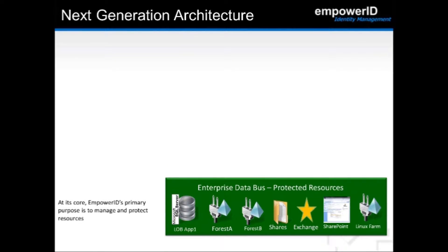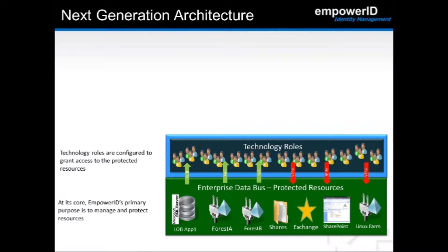EmpowerID's next-generation architecture focuses on the management and protection of enterprise resources — whether they be Active Directory resources, Exchange mailboxes, or other application objects. All processes within the system exist for the purpose of managing and protecting these resources. We protect access to these resources through the creation and management of technology roles, known as management roles and access levels, which grant an actor varying levels of access.